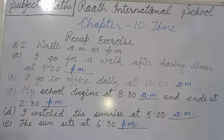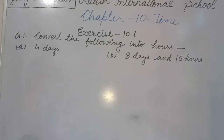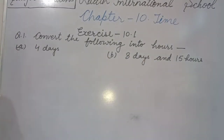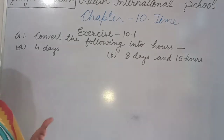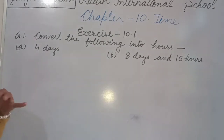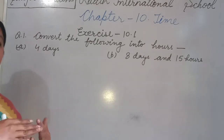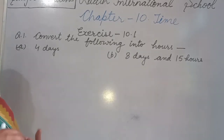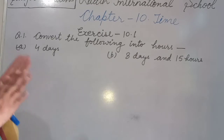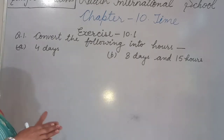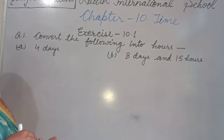Now we do Exercise 10.1, Question 1: Convert the following into hours. When we convert a bigger unit into a smaller unit, we always multiply. Here we are converting days into hours. Days are the big unit and hours are the smaller unit, so we will multiply.